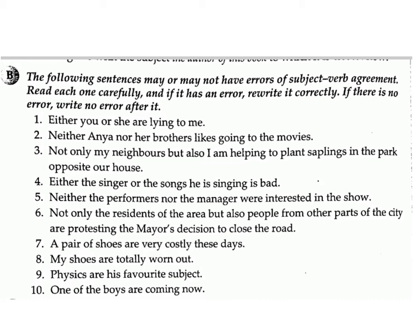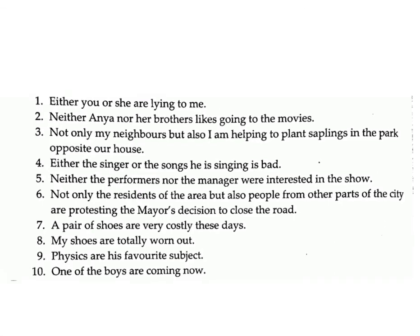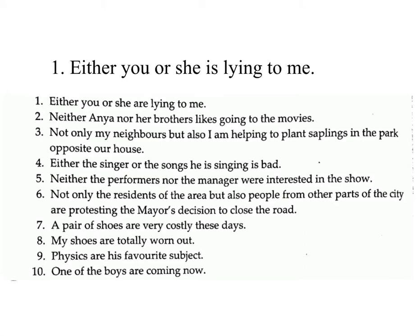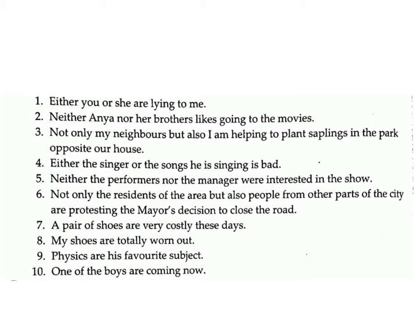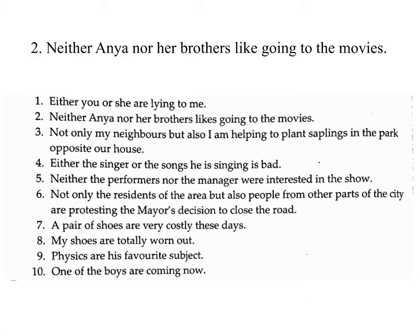Ten: 'If I do not like something, I say so frankly but politely.' Answer: if. Exercise B: The following sentences may or may not have errors of subject-verb agreement. Read each one carefully and if it has an error, rewrite it correctly. If there is no error, write 'no error.' One: 'Either you or she are lying to me.' Answer: Either you or she is lying to me.